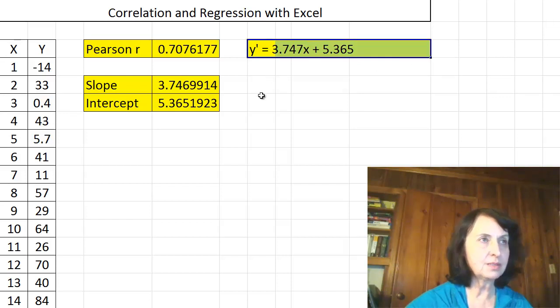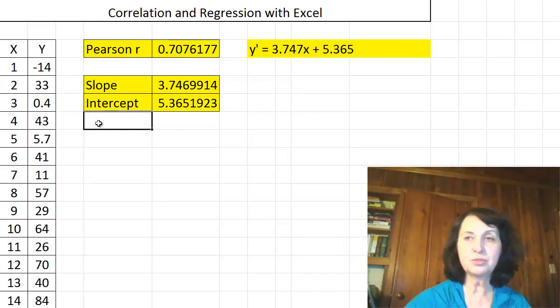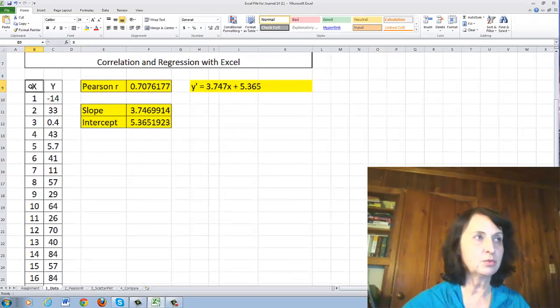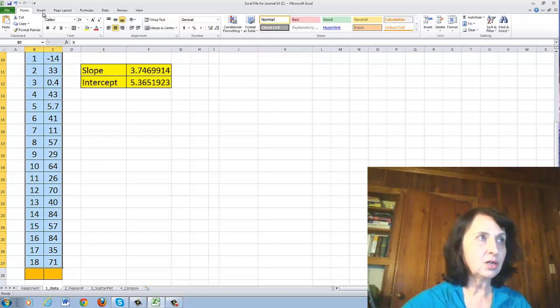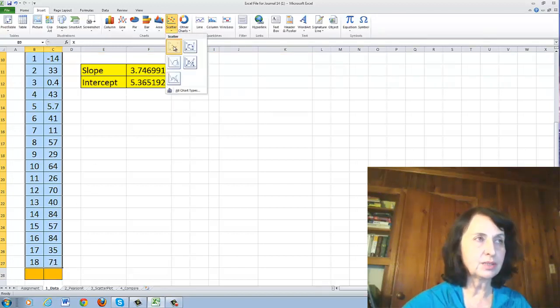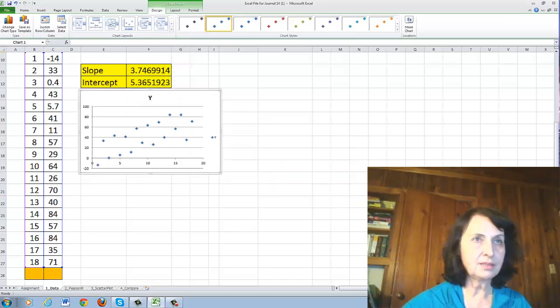Let me put this in beautiful yellow color. Now, the next step, I have this regression formula. I want to see how my data looks like. So I will select all data block, go in insert, scatter plot, and this is the scatter plot.